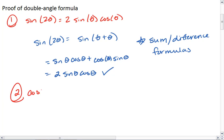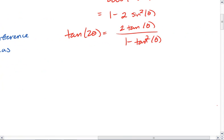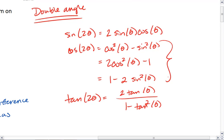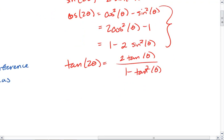For cosine, we're told that cosine of 2 theta equals, and we have a slew of options. Remember, we have all three of these up here. But let's look at how we might prove this.